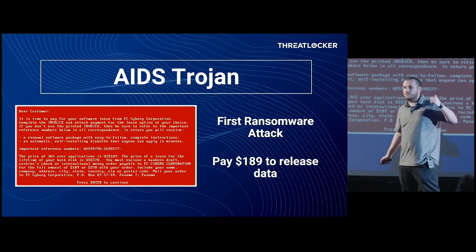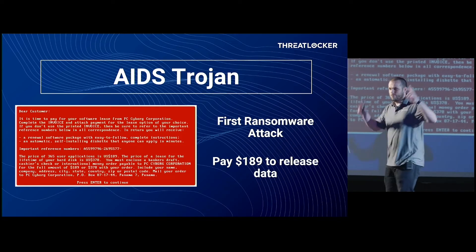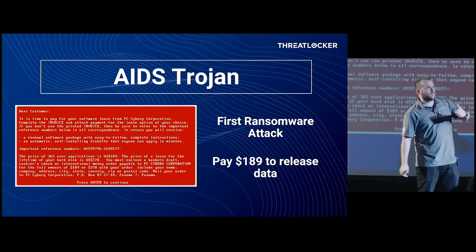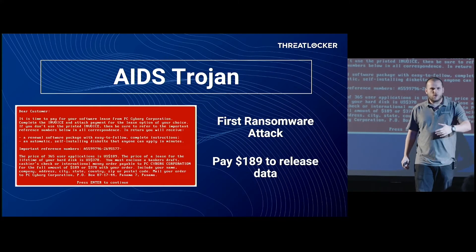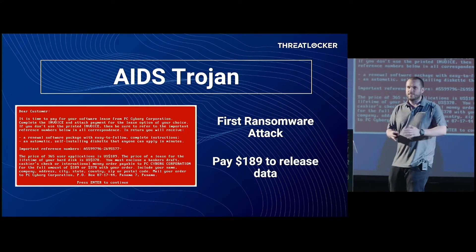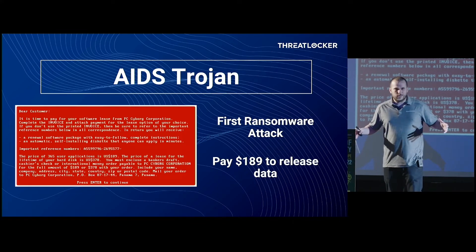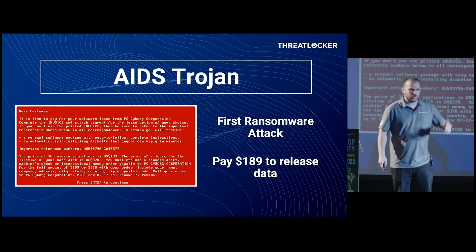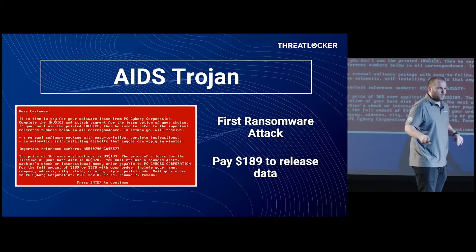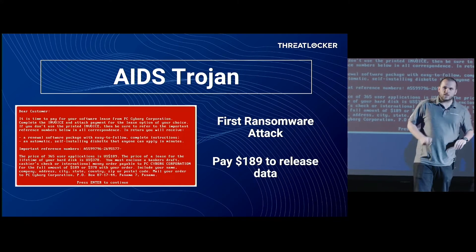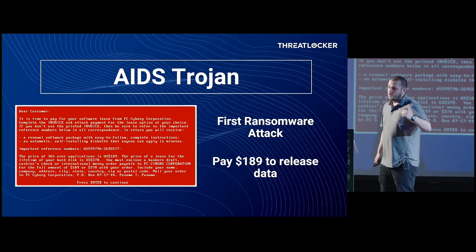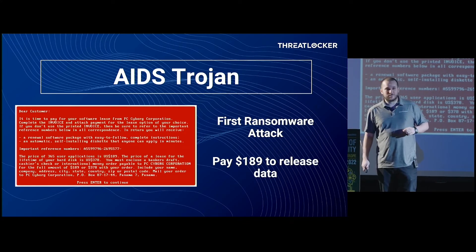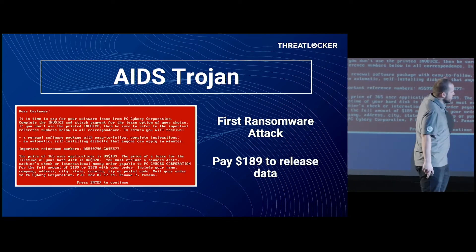This is actually the first version of ransomware as we know it today. When we think of ransomware, we think 2012, 2013 — Cryptolocker v3 spreading across networks and decimating everything. Cryptolocker hit about 250,000 machines globally. But ransomware has actually been around for a lot longer than we think. This is the AIDS Trojan, which was actually first released in 1989. We don't think of ransomware being that old. So what was the AIDS Trojan?